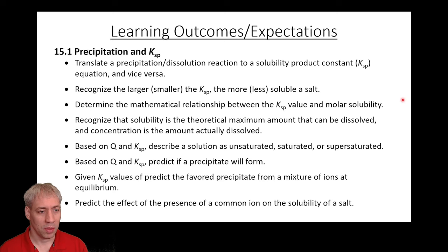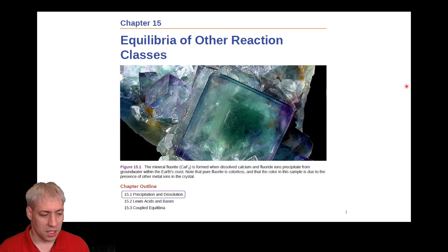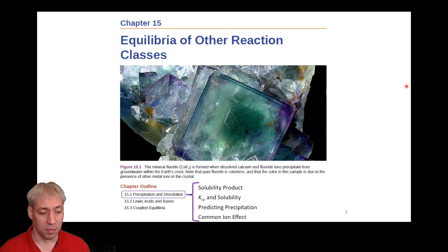For section 15.1, precipitation and Ksp, we're going to break it out into subcategories. We'll talk about the solubility product first — Ksp and how it relates to solubility — then predicting precipitation, and then we'll close with the common ion effect.